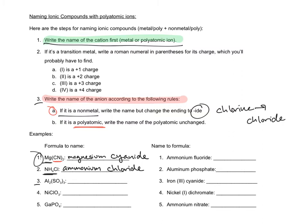Number three starts with aluminum — aluminum is the cation, it is a metal, so you just write the name: aluminum. The last part, SO3, is an anion and it's a polyatomic, so you just write the name unchanged. SO3 is sulfite — had to go check my list — so that one is aluminum sulfite.